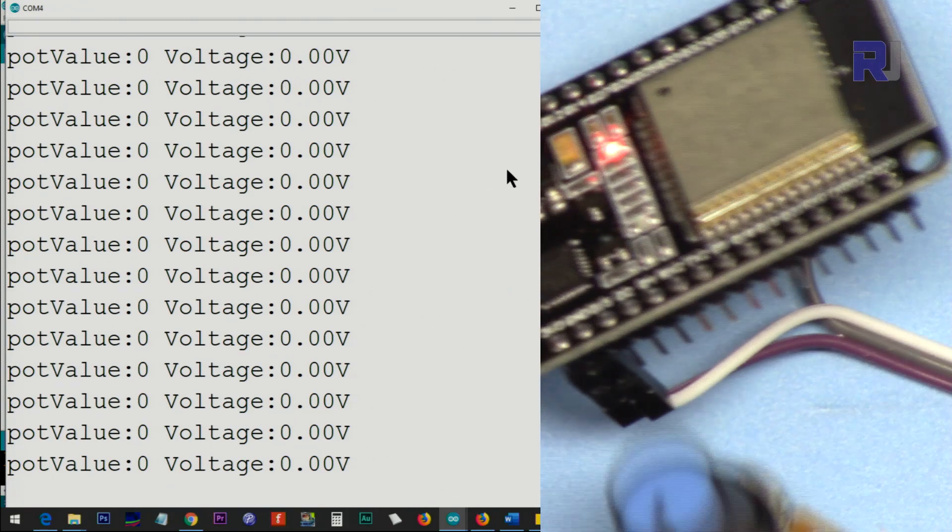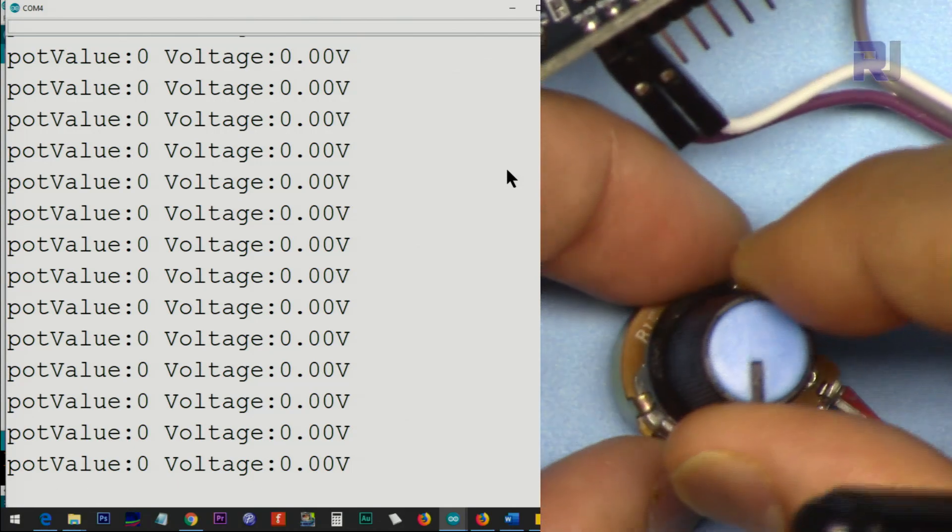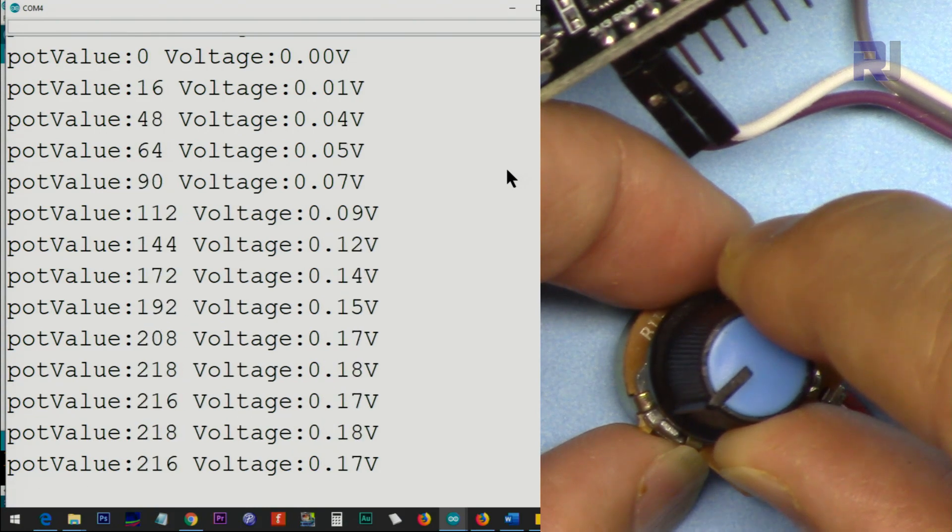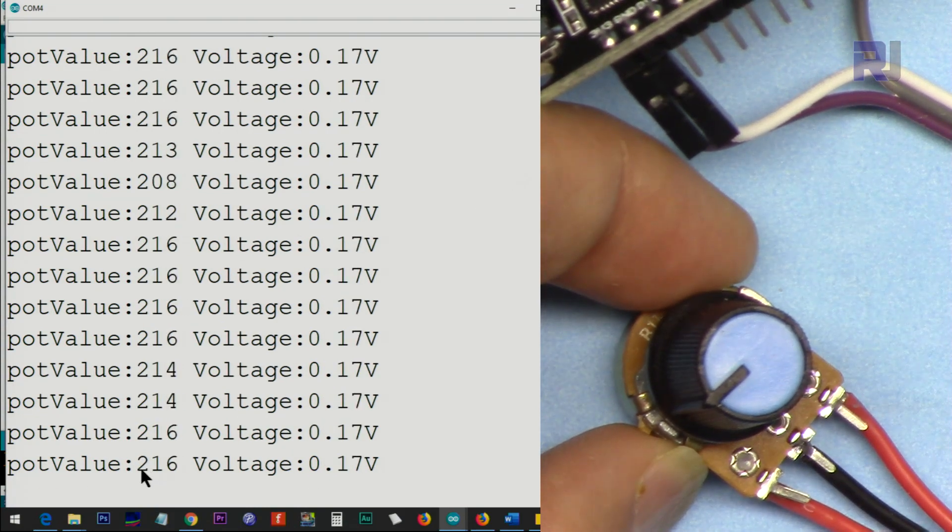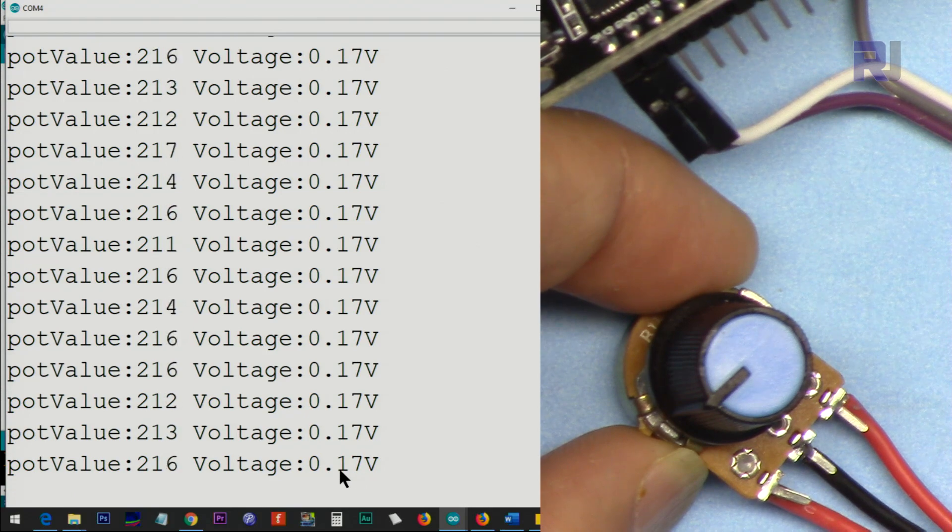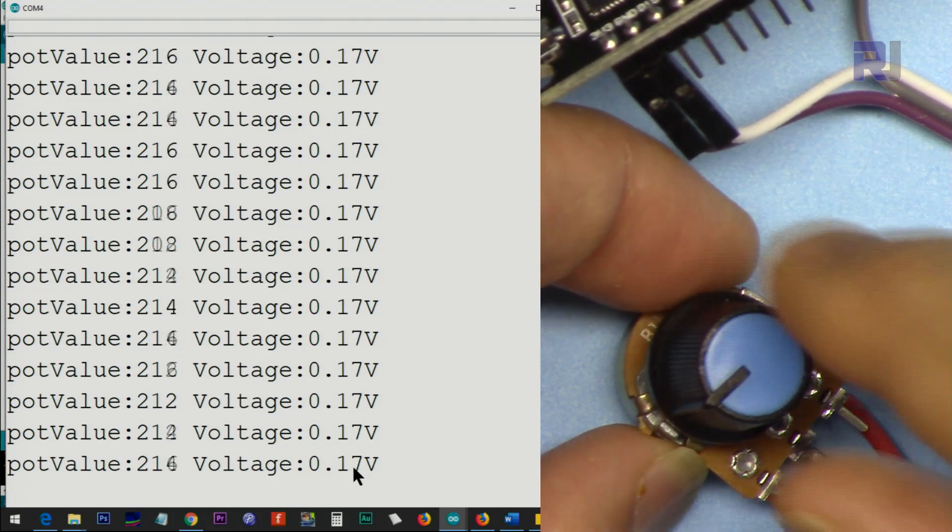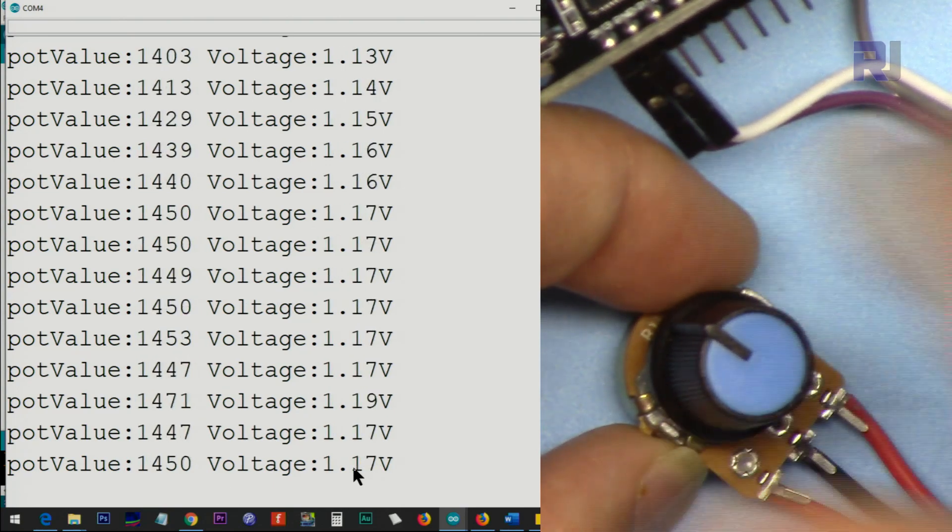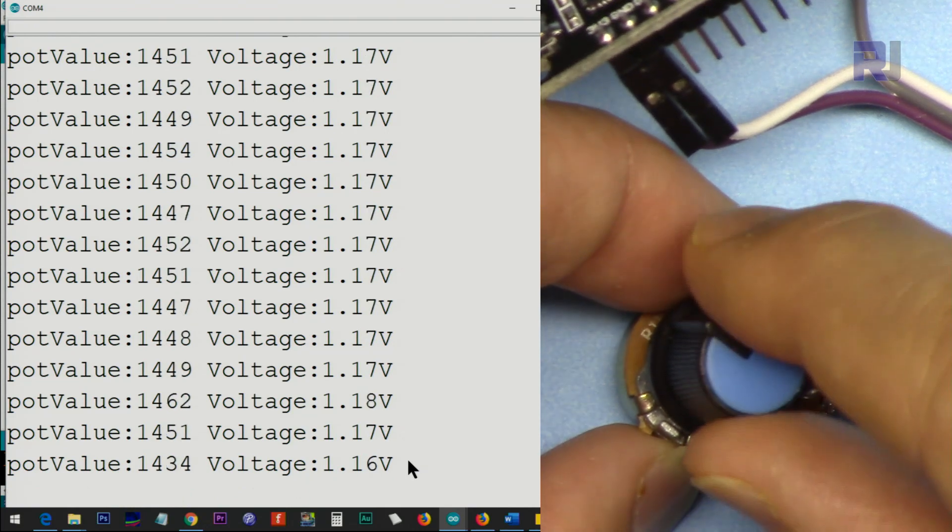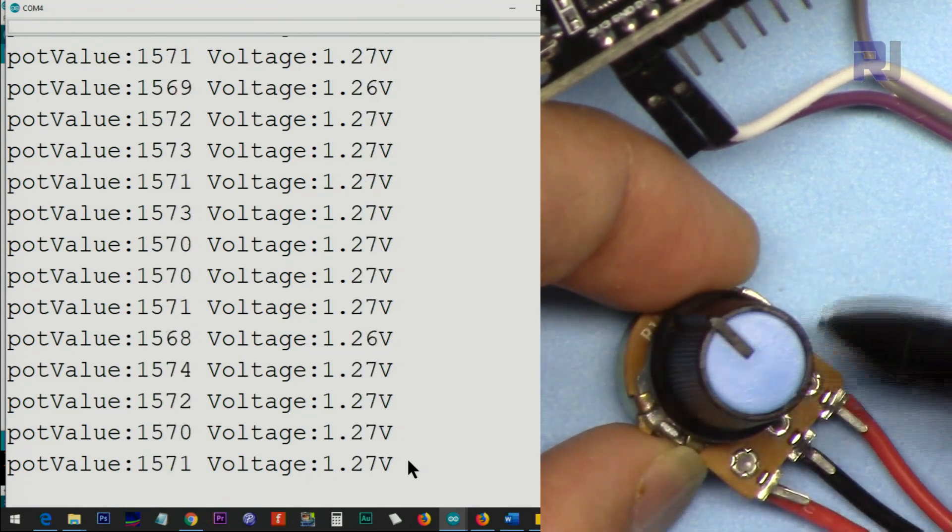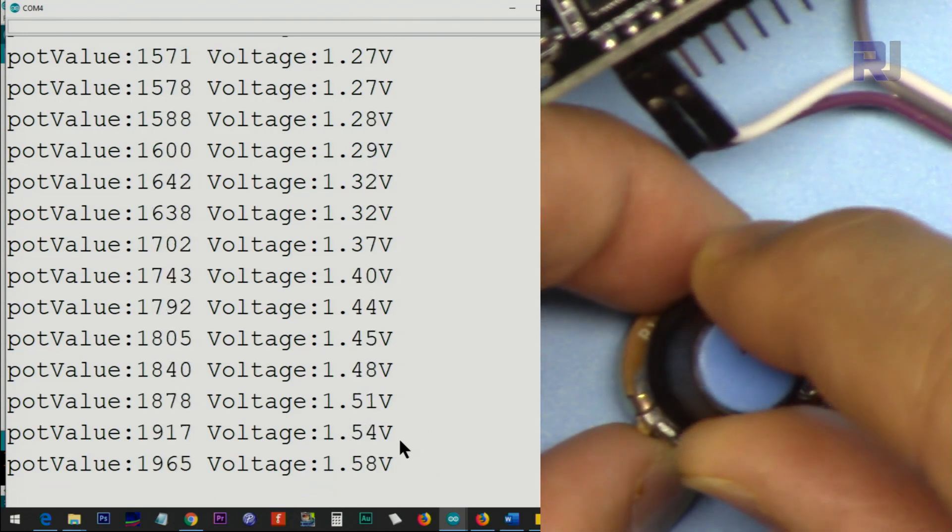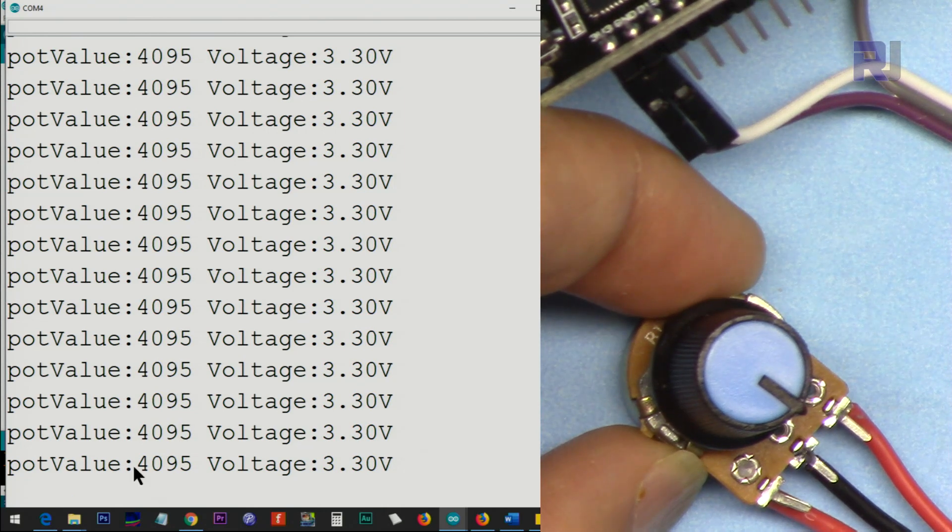Now this is connected and I'm going to rotate the potentiometer. If I rotate it clockwise you will see the value jumped to 216 and the voltage is 0.17 volts or 170 millivolts. I will increase it slowly. I'm almost at the middle, 1.17 volts. If this is fully linear you will see proper value with respect to the position of the knob. If I rotate it to the right you will see we are getting 4095 and 3.3 volts.